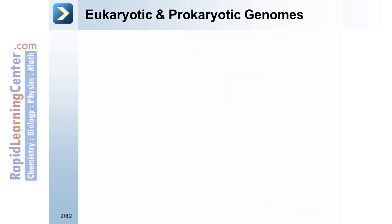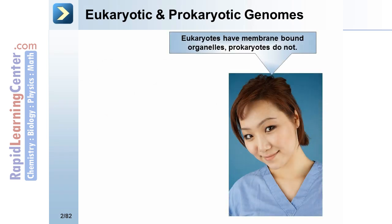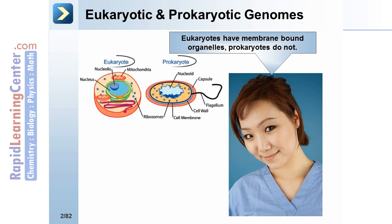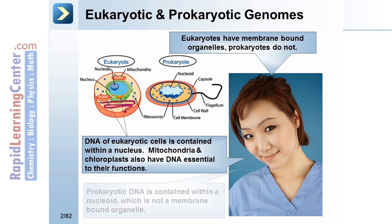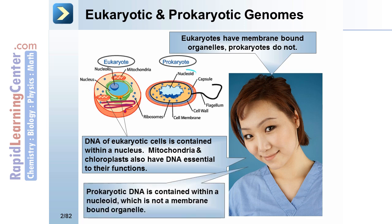Eukaryotic and prokaryotic genomes. Eukaryotes have membrane-bound organelles; prokaryotes do not. DNA of eukaryotic cells is contained within a nucleus. Mitochondria and chloroplasts also have DNA essential to their functions. Prokaryotic DNA is contained within a nucleoid, which is not a membrane-bound organelle.